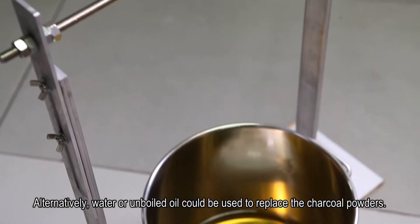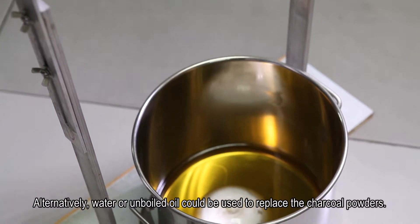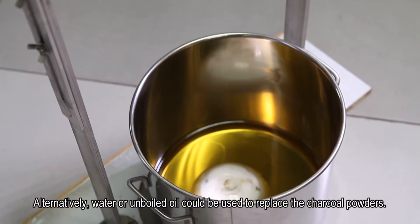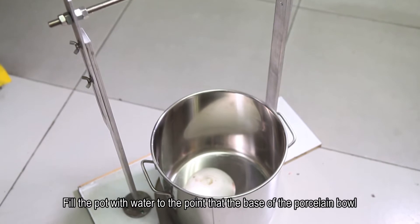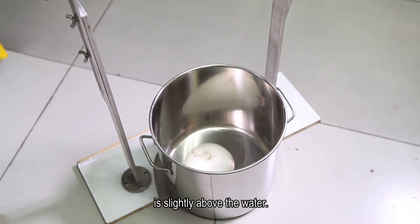Alternatively, water or unboiled oil could be used to replace the charcoal powders. Fill the pot with water to the point that the base of the porcelain bowl is slightly above the water.